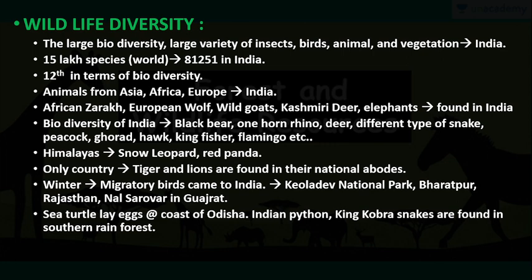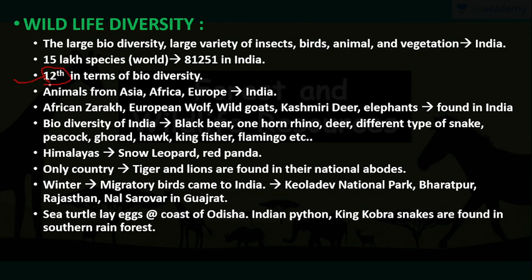If we talk about the whole world, there are total 15 lakh species. Of them, in India, we have 81,251 species. If we talk about the rank of India in terms of biodiversity, we are on the 12th rank. We have animals from Asia, Africa and Europe — African zarek, European wolf, wild goats, Kashmiri deer and elephants.